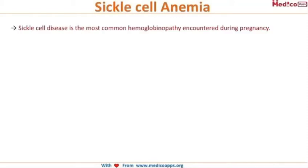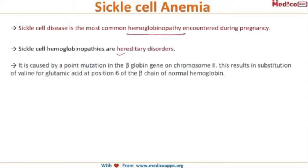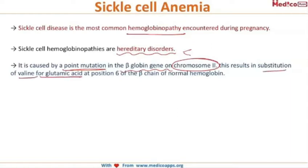Sickle cell anemia is the most common hemoglobinopathy encountered during pregnancy. These sickle cell diseases are hereditary disorders transmitted equally by males and females. It is caused by a point mutation in the beta globin gene on chromosome number 11, where there is substitution of valine for glutamic acid at the sixth position of the beta chain of normal hemoglobin.